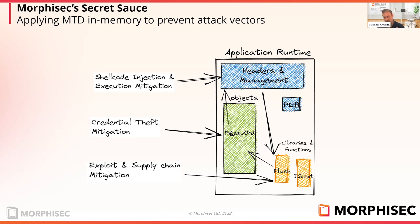It's a different approach: instead of scanning, you're changing the target so the attacker fails. The same applies with shellcode, exploits, and supply chains — similar techniques. We shake the ground beneath the attacker, we change the environment, and we make the attack surface unpredictable. This is a very different approach because the traditional approach doesn't really work. With moving target defense, MorphiSec succeeds in preventing many of those stealthy attacks.